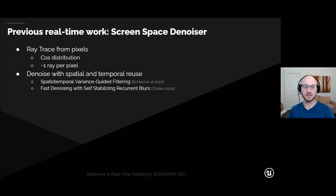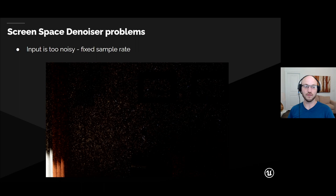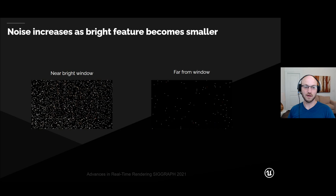The other big category of previous work is the screen-space denoiser. These approaches trace rays from individual pixels on the screen at a very small number — usually one ray per pixel — and then attempt to lower noise to acceptable levels with spatial and temporal reuse. Screen-space denoisers can give very good quality, especially recent work on recurrent blurs. But the problem is mostly happening before they even run: the input is just too noisy in many indoor cases. Rays are traced with just a cosine distribution and fixed sample rate. Noise increases further from a bright light source, and the denoiser can't do anything except increase filtering, which reduces quality.